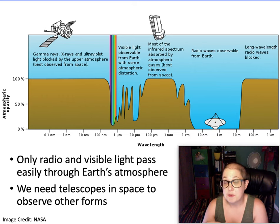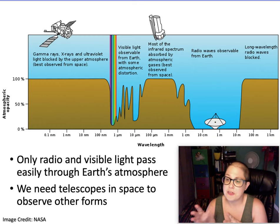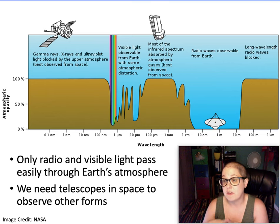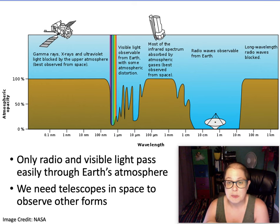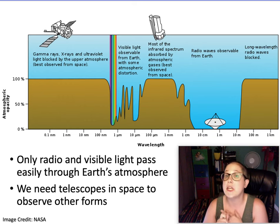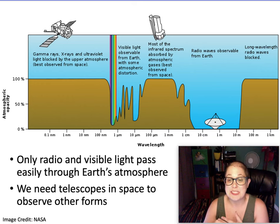Radio waves further toward longer wavelengths — as shown by that little dish symbol — can also get through the atmosphere, so radio telescopes are often built on the ground. Some parts of the spectrum are completely blocked at 100%: gamma rays, x-rays, and almost all ultraviolet light. A little bit of UV gets through — which is why you need sunscreen — but not nearly enough for astronomical observations. Those types of telescopes have to be put completely in space, above the atmosphere.